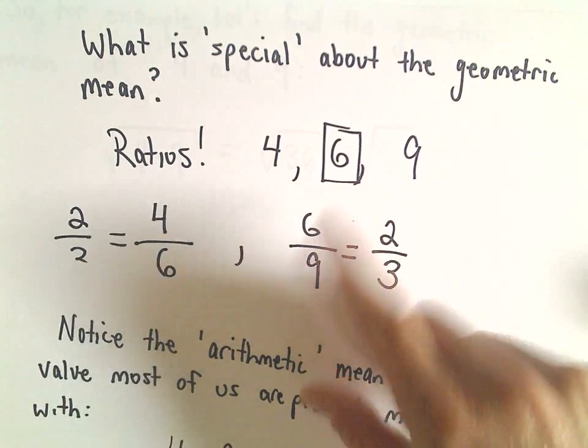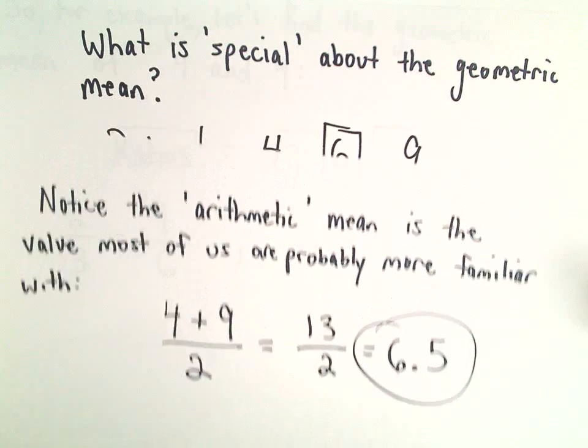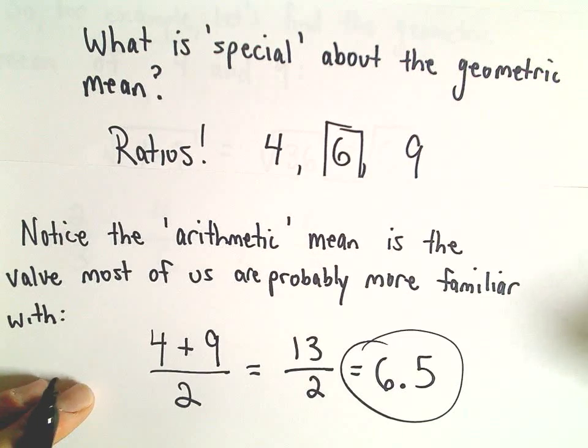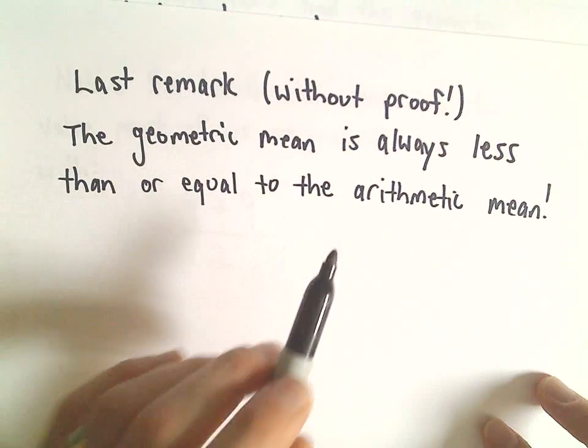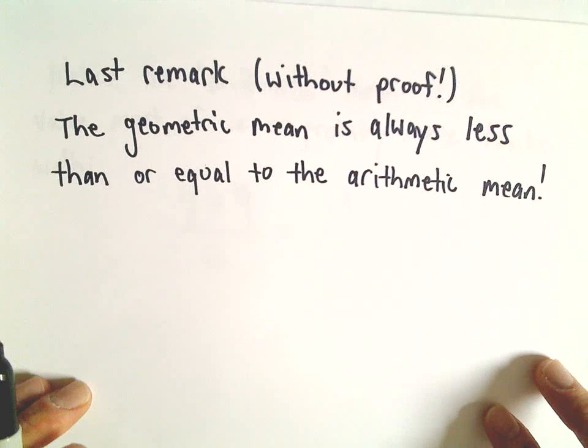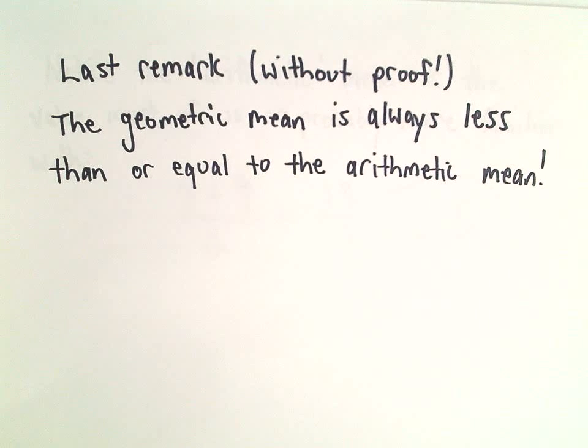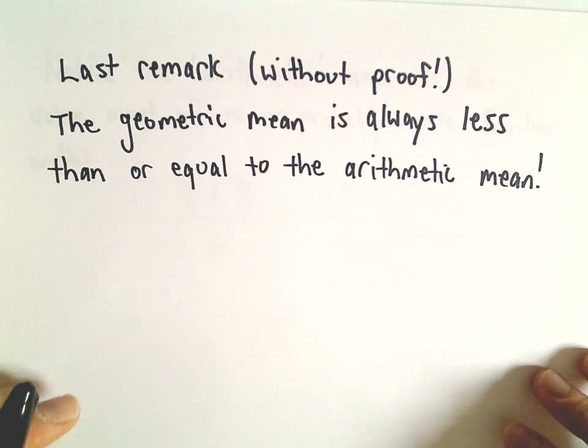This leads to one other remark without a proof: it turns out that the geometric mean is always less than or equal to the arithmetic mean. So one other useful result.